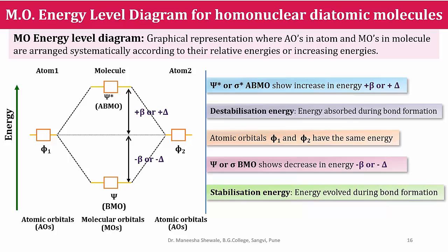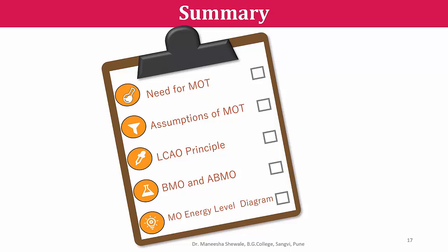We can summarize what we discussed in this video. We started with the assumptions and drawbacks of the valence bond theory, and these drawbacks gave rise to the molecular orbital theory. Then we discussed the assumptions on which molecular orbital theory is based. The formation of molecular orbitals was explained using the LCAO principle. The atomic orbitals combine to form bonding and antibonding molecular orbitals, which were discussed in detail. Finally, we saw how to construct the MO energy level diagram.